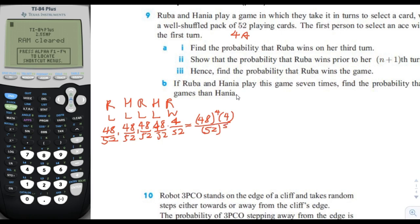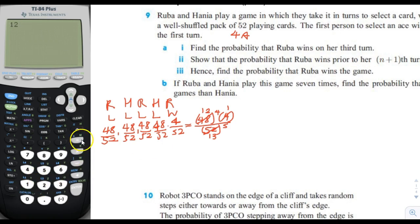To reduce the fraction, note that 52 equals 4 times 13. So we can change the denominator to 13 to the fifth, the numerator's repeated factor to 12 to the fourth, and the 4 in the numerator becomes 1. So the answer is 12 to the fourth over 13 to the fifth.